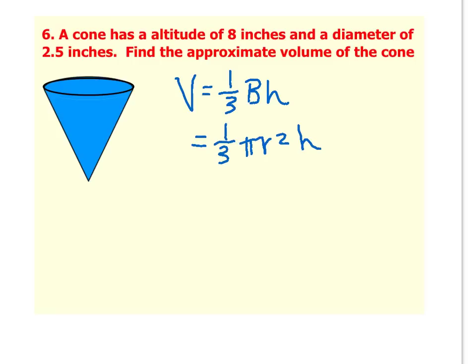If I'm taking a look at what I've been given, remember altitude is just another word for height. So I know that the height of this cone is 8. And the radius is going to be half of the diameter. So if the diameter is 2.5, the radius would be 1.25.